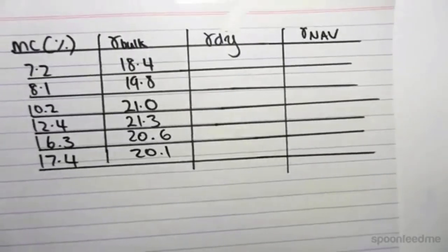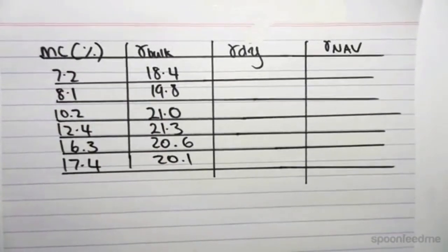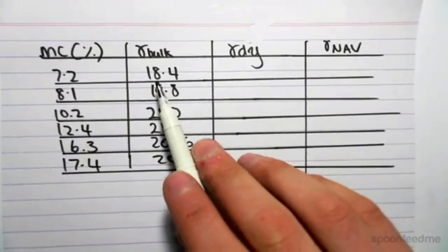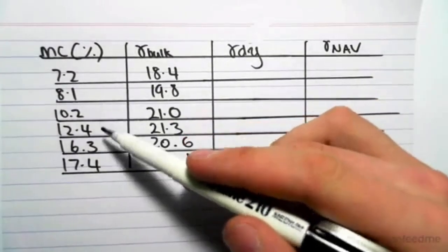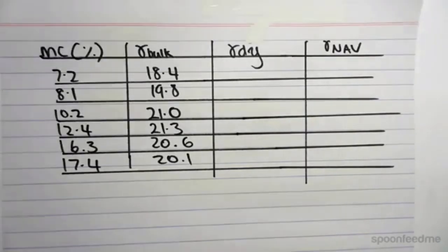So let's go and do an example. Say we're given this information, a moisture content of 7.2% against a gamma bulk. So this table shows moisture content against gamma bulk. We can go ahead and find the dry unit weight at any point.